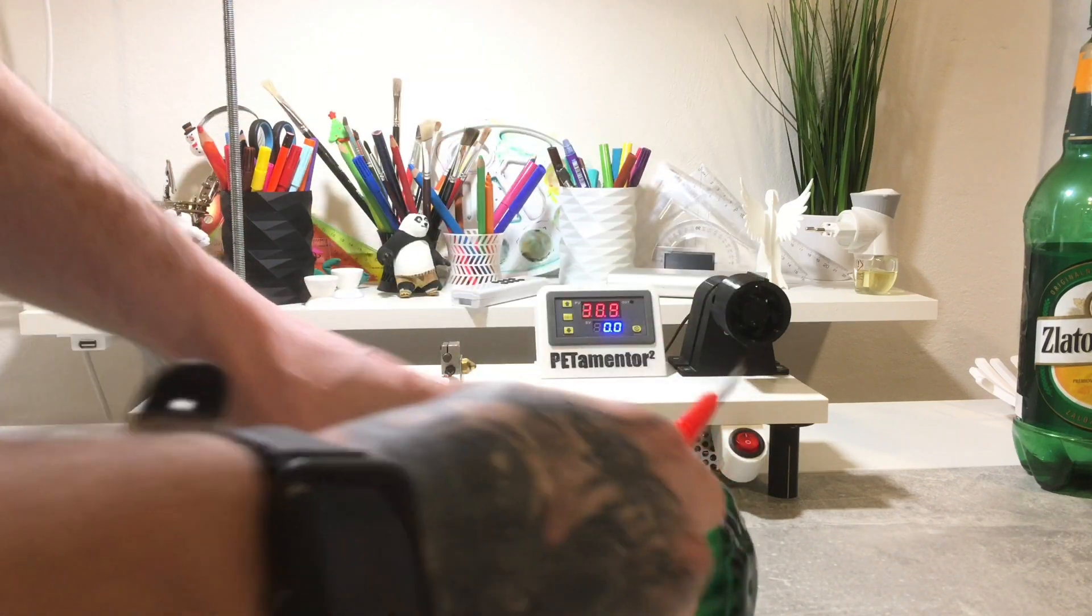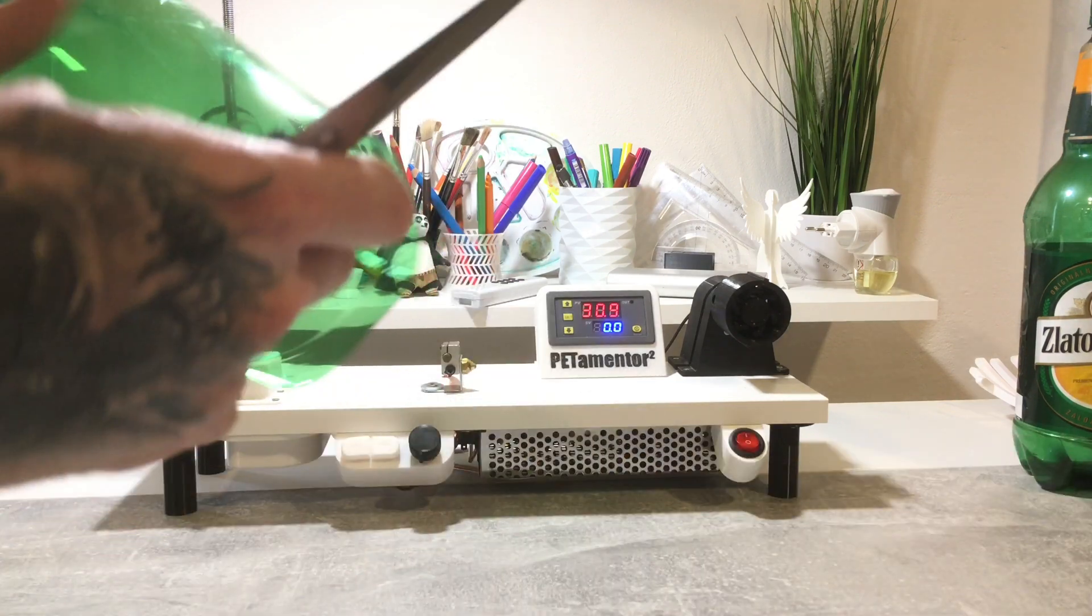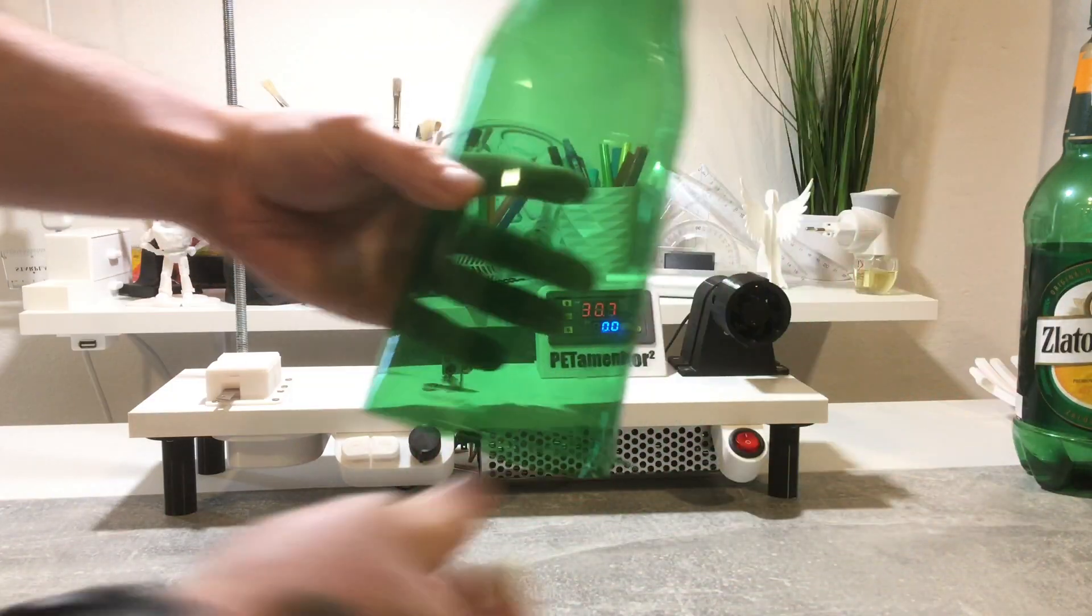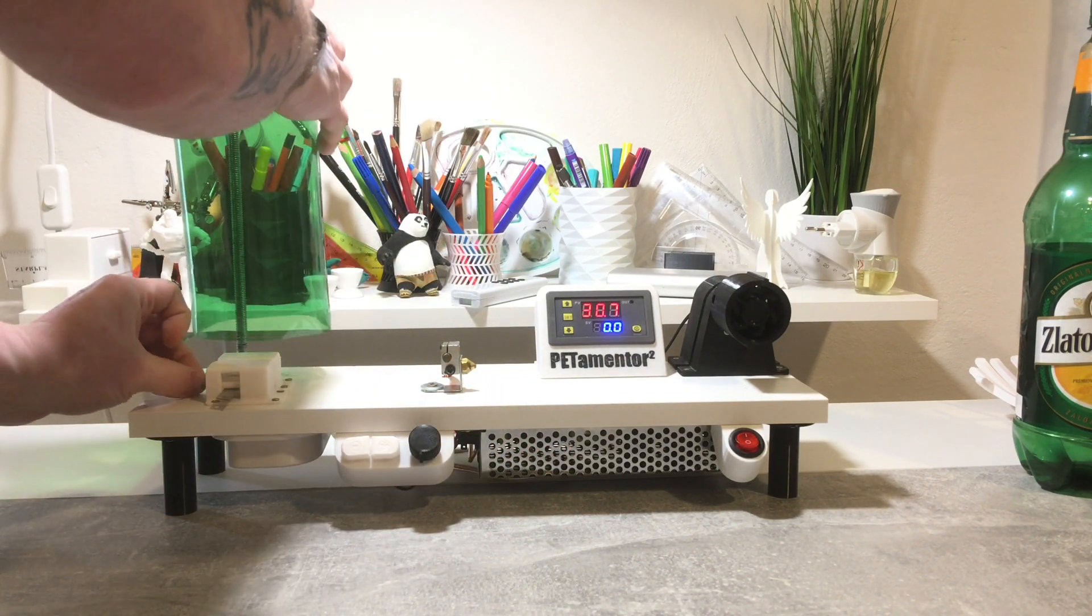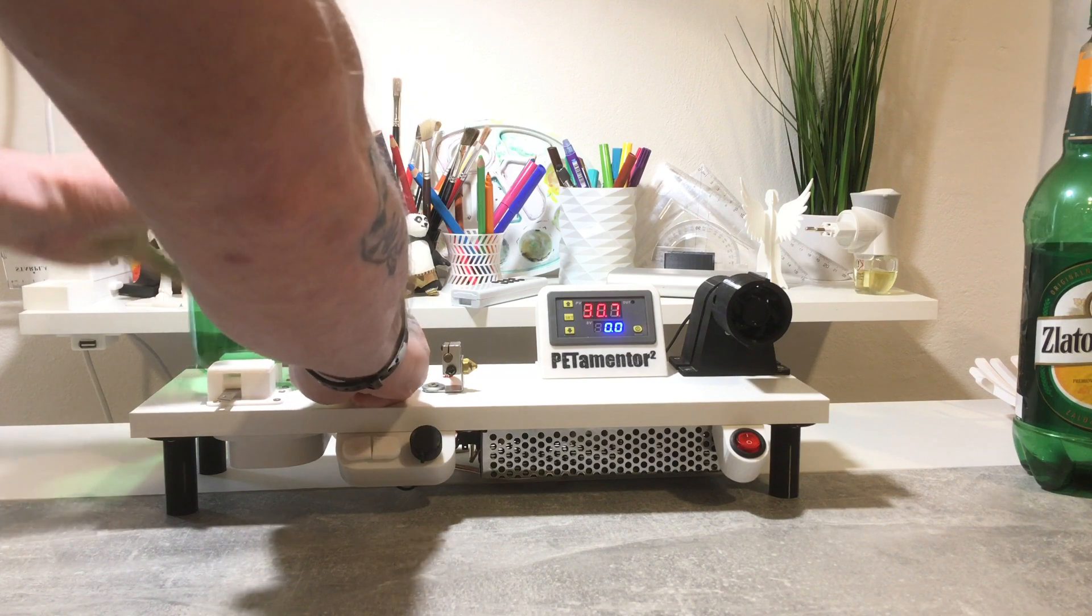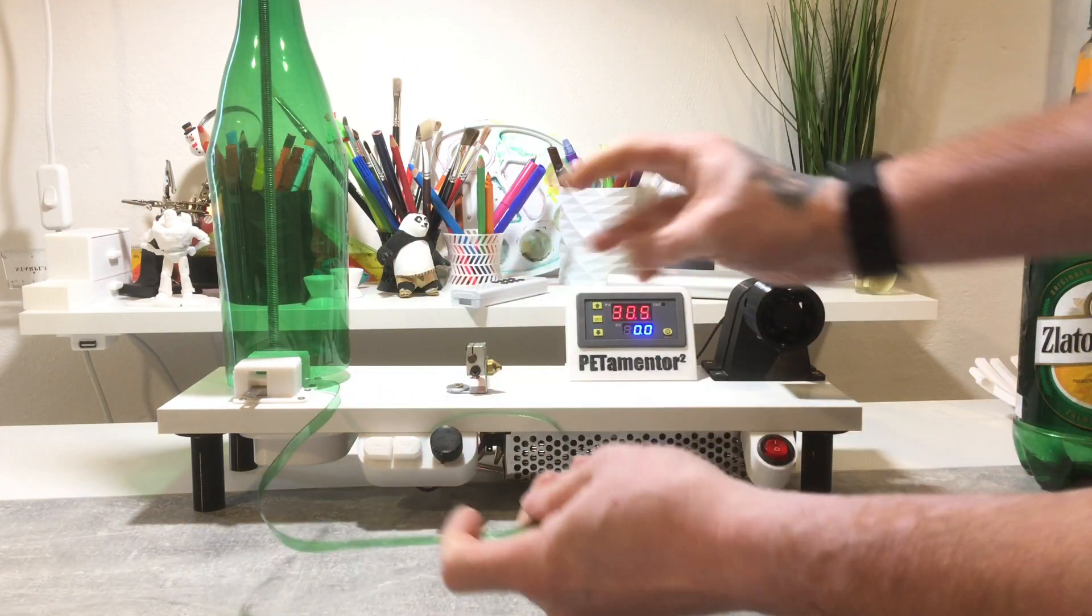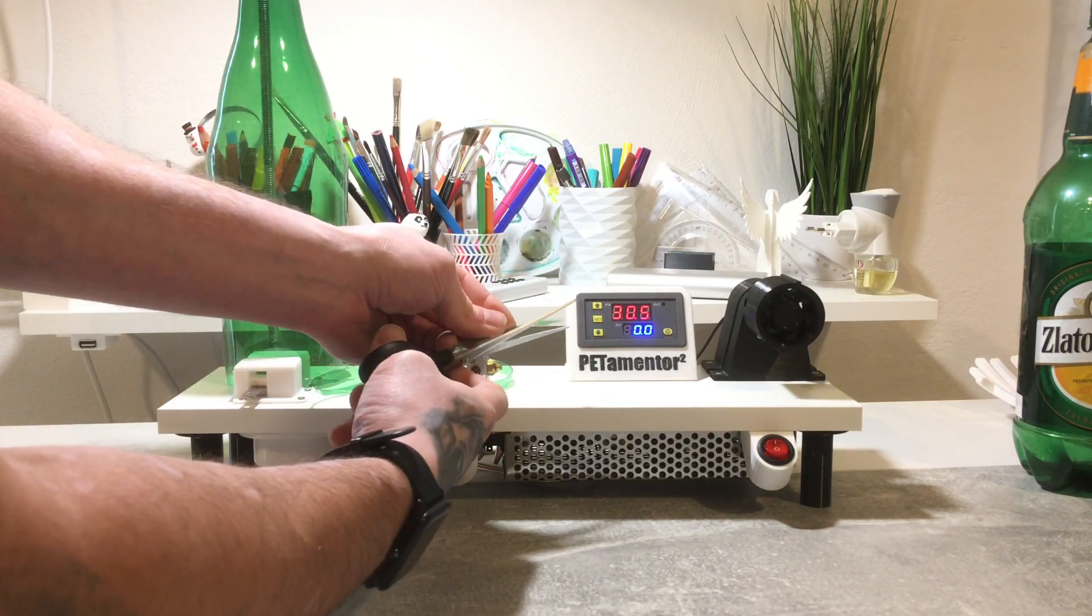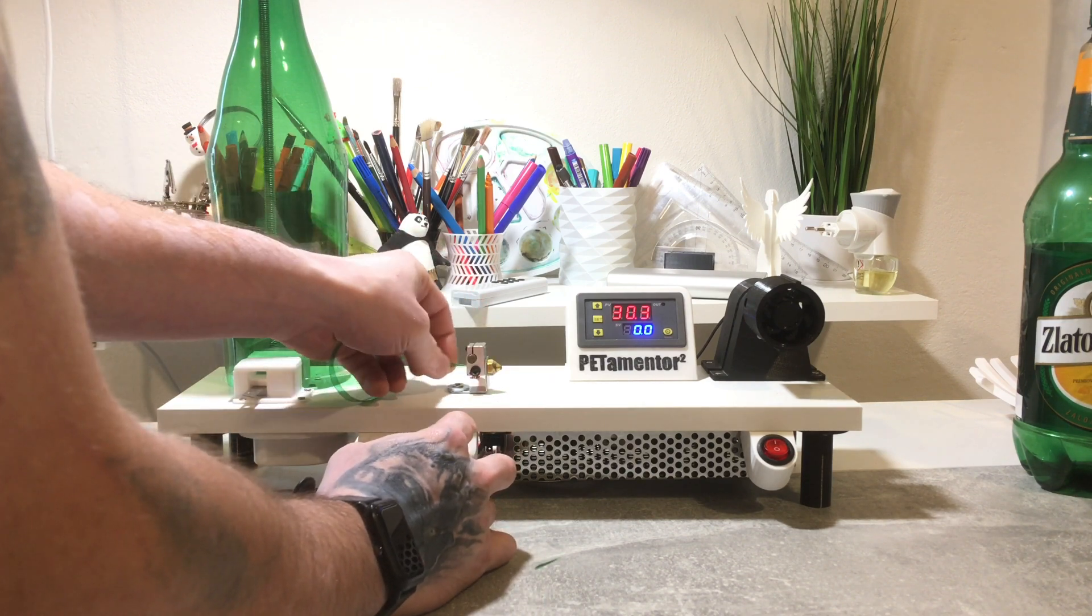Cut off the bottom of the bottle and make a thin strip for better guide through the cutter. Cut a longer strip for easier hooking on the spool and make a thin tip for better guiding.